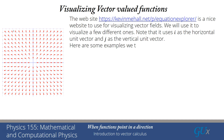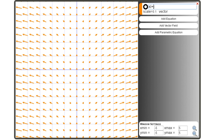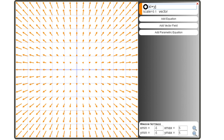Here are some examples we're going to try. The first one is x·i + y·j. What you can see is this looks similar to the one we had before, although now the vectors are growing as we move out. The vector at the origin is exactly zero, so this is a situation where this vector field is well-defined, even though it looks like it might have a singularity at the origin.